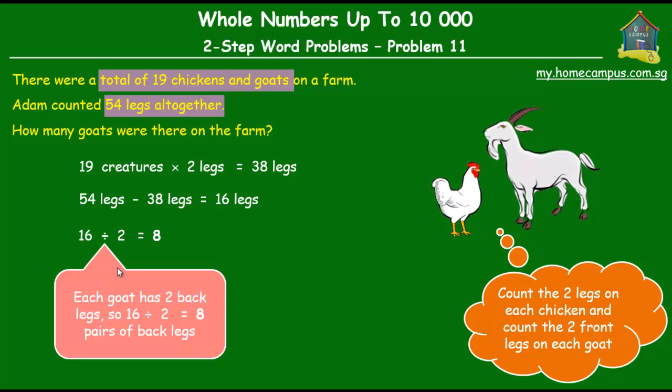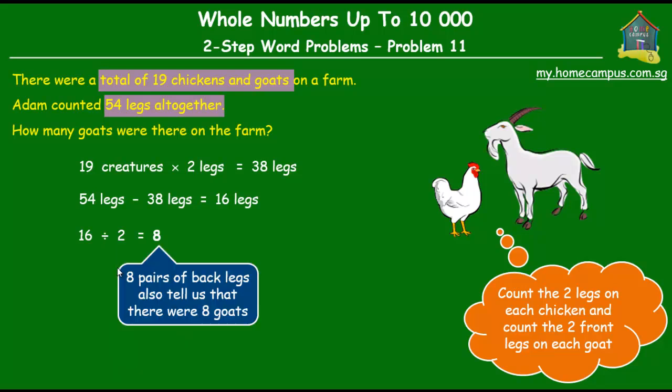Each goat has two back legs, and if there are 16 back legs, then there are 16 divided by 2, or 8 pairs of back legs — and hence there are 8 goats. 8 pairs of back legs means 8 goats, since there is one pair of back legs per goat. So 8 pairs of back legs means there are 8 goats. That is the answer: how many goats were there on the farm? There were 8 goats on the farm.